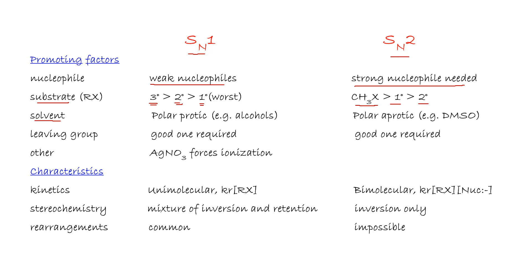For the solvent/medium, SN1 will be favored in polar protic solvents like alcohol or water. For SN2, polar aprotic solvents work well, like dimethyl sulfoxide or dimethylformamide. In both mechanisms, the leaving group should be a good one. SN1 can also be enhanced using silver nitrate.